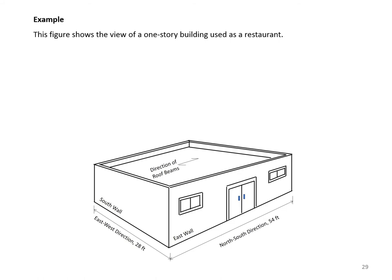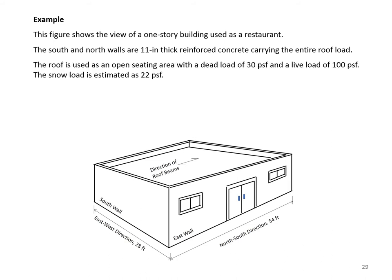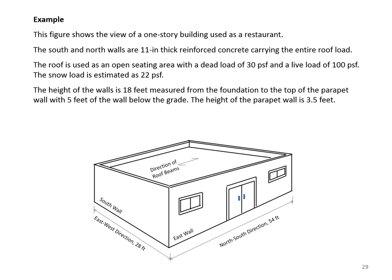Let's look at an example. This figure shows a one-story building used as a restaurant: 54 feet in the north-south direction and 28 feet east-west. Roof beams span 54 feet. The south and north walls are 11-inch thick reinforced concrete carrying the entire roof load. The roof is an open seating area with dead load 30 psf and live load 100 psf. Snow load is 22 psf. Wall height is 18 feet from foundation to top of parapet, with 5 feet below grade and a 3.5-foot parapet.